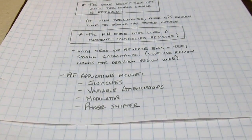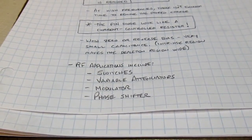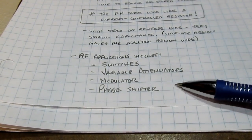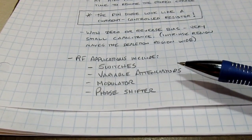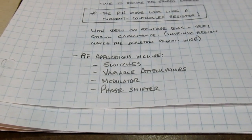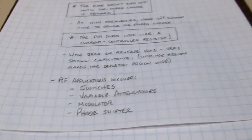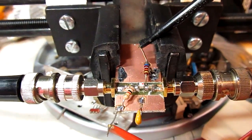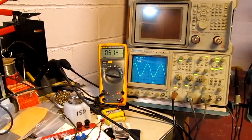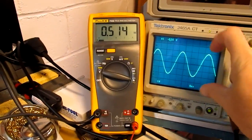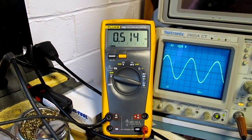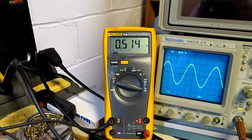PIN diodes can be used for single or multiple pole, multiple throw switches, and by taking advantage of their current-dependent variable impedance, you can create variable attenuators, modulators, and phase shifters. The key property is the ability to switch relatively large RF currents with relatively small bias currents. Thanks for watching.